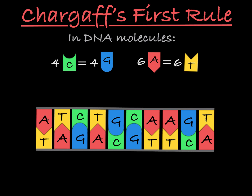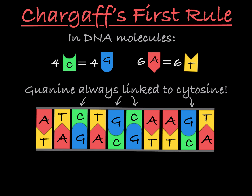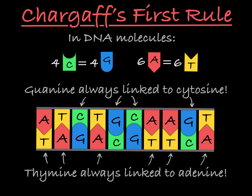So in this double-stranded molecule, everywhere you see guanine, you will find it attached by hydrogen bonds to cytosine. And everywhere you see thymine, you will find it attached to an adenine. That is why Chargaff noted a one-to-one guanine to cytosine ratio and a one-to-one adenine to thymine ratio in the DNA he studied.